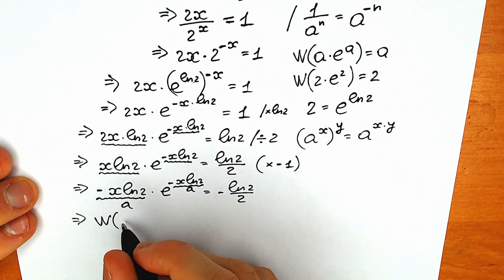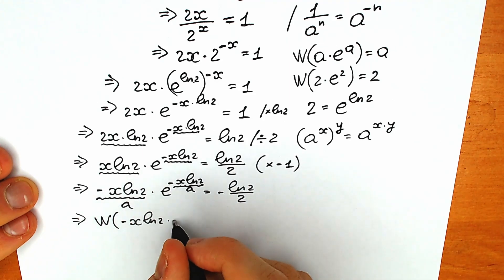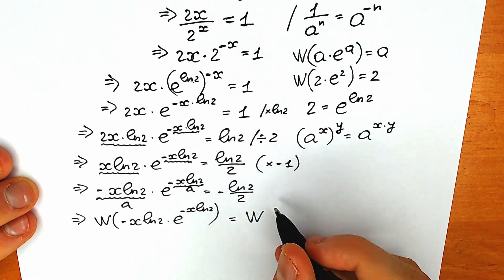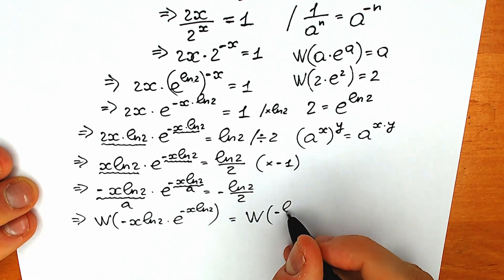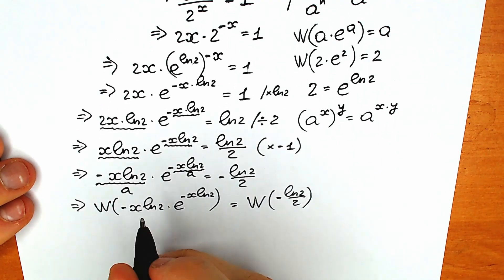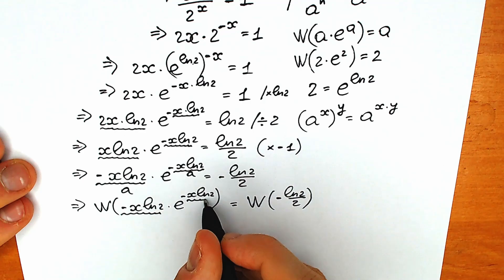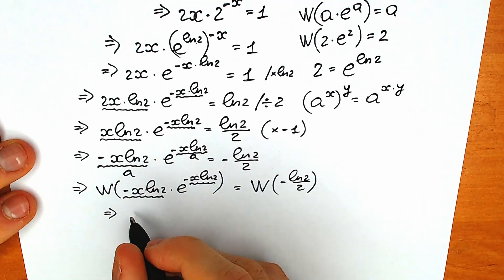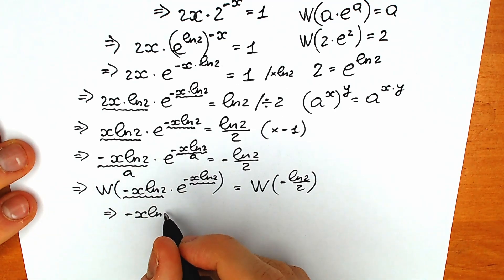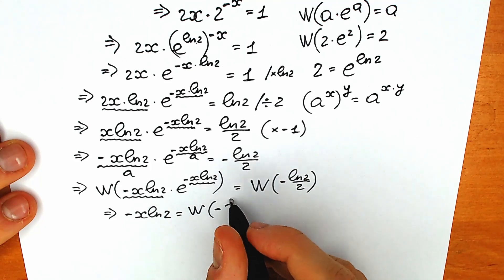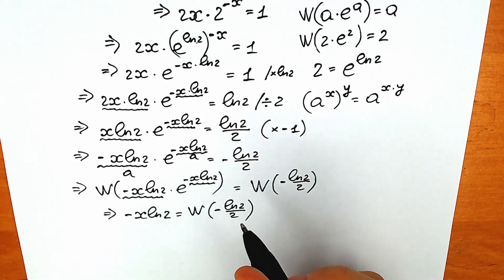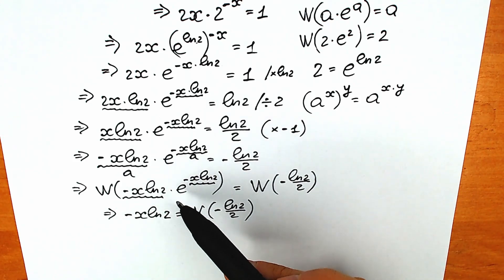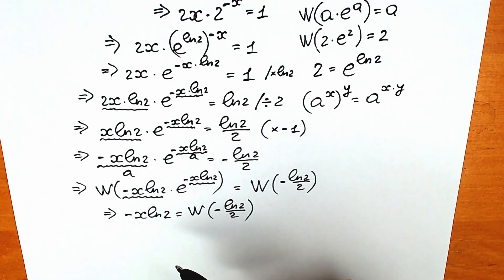As a result, we apply the Lambert W function to both sides: W of minus x natural log 2 times e to the power minus x natural log 2, equal to W of minus natural log 2 over 2. The Lambert W function of this expression gives us only our a, so a in our case equals minus x times natural log 2. As a result, we have minus x natural log 2 equal to W of minus natural log 2 over 2. This function simplifies us a lot — we now have only minus x natural log 2 without Lambert W and without e.